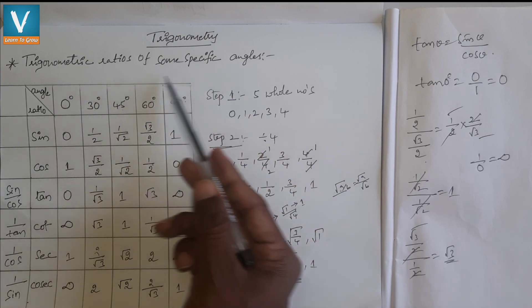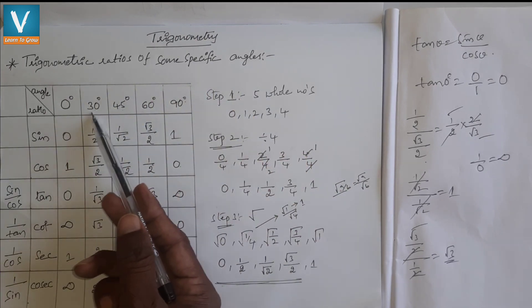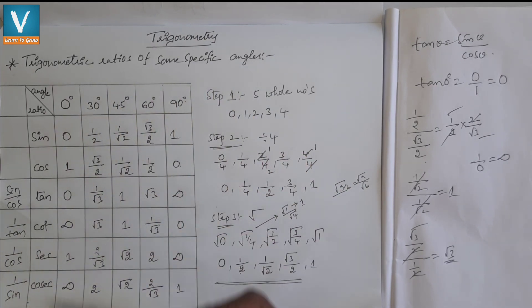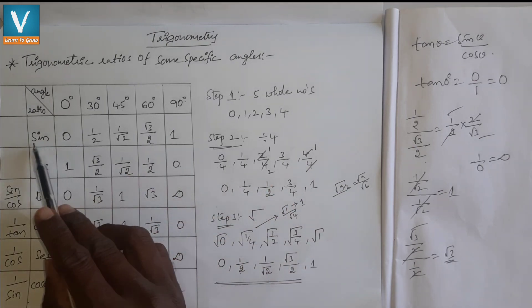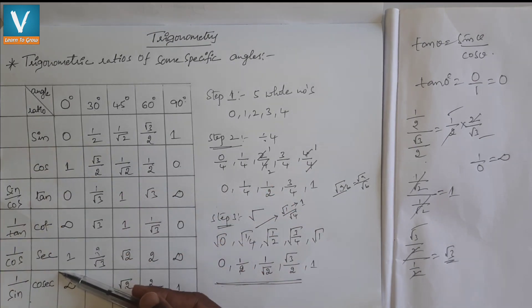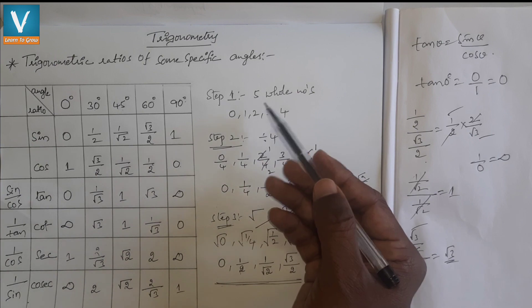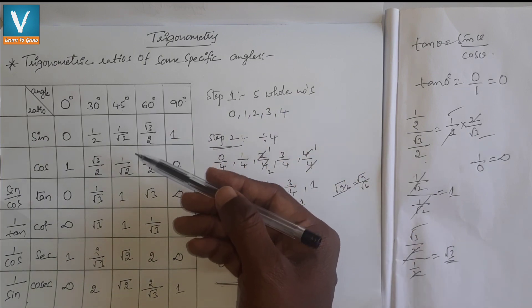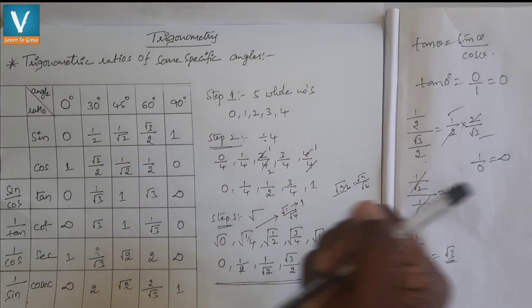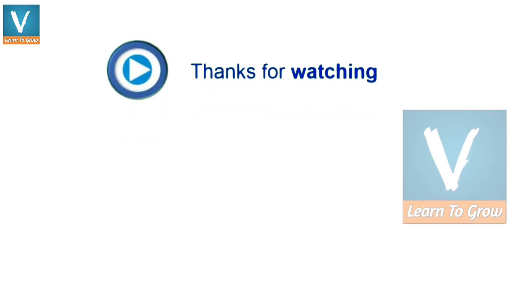These are the trigonometric values for the angles 0°, 30°, 45°, 60°, and 90°. If you know the sine values, the rest can be found very easily. I used the whole numbers process to derive these values. I hope you got it — thank you so much.